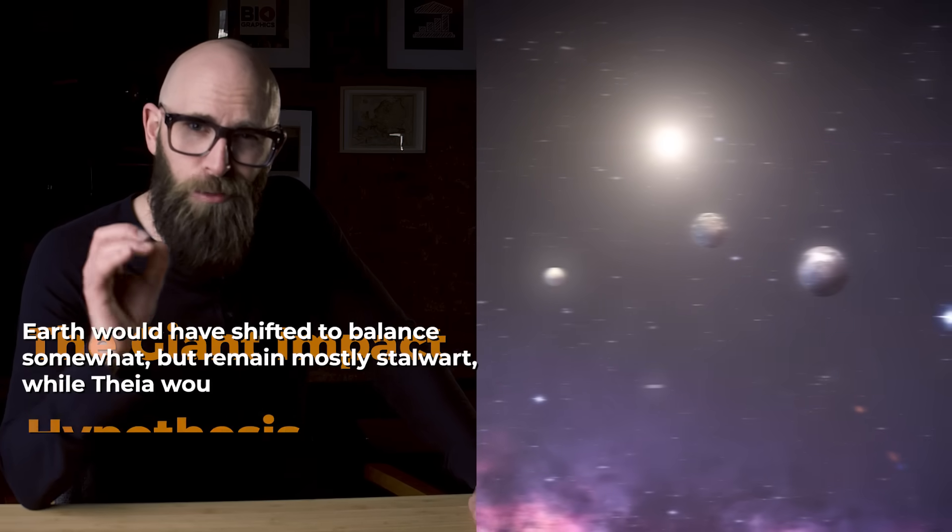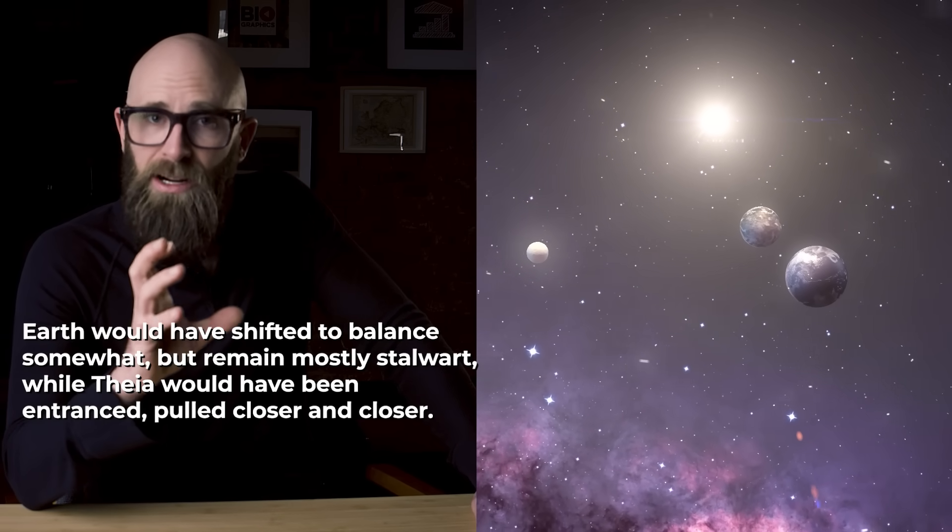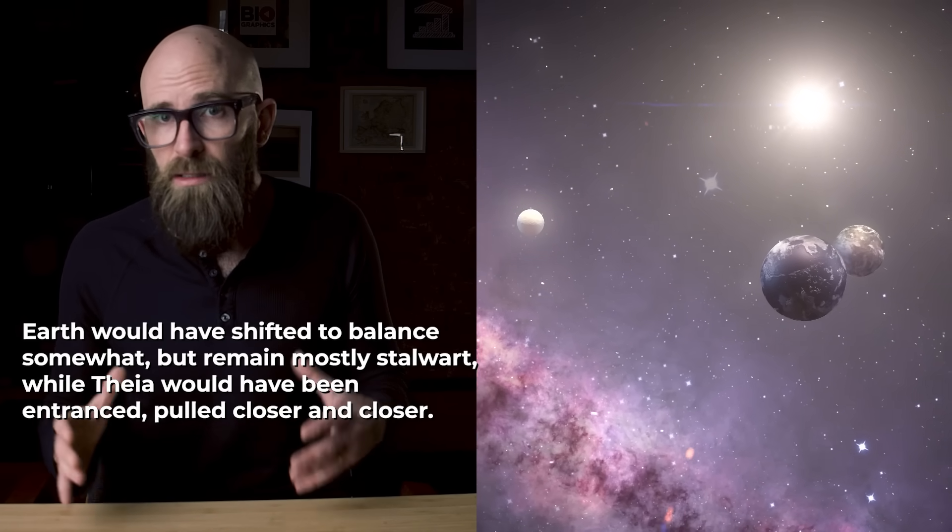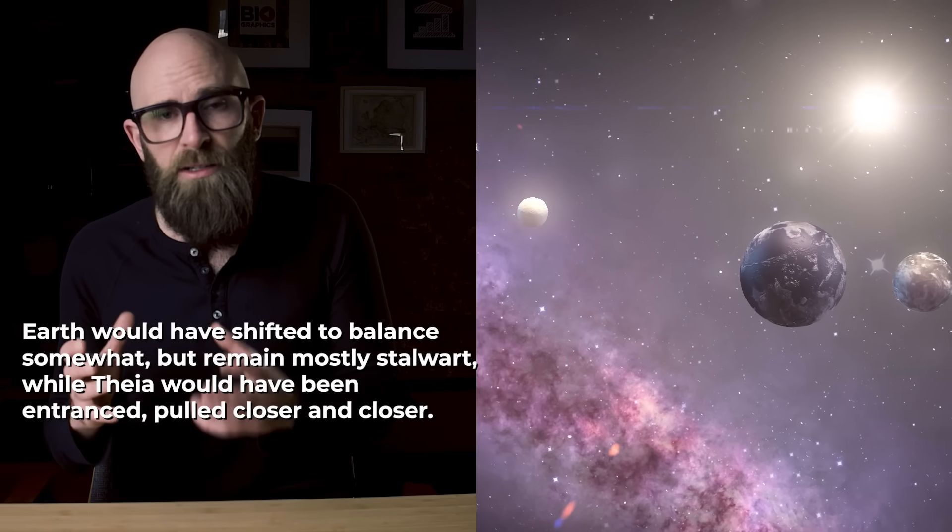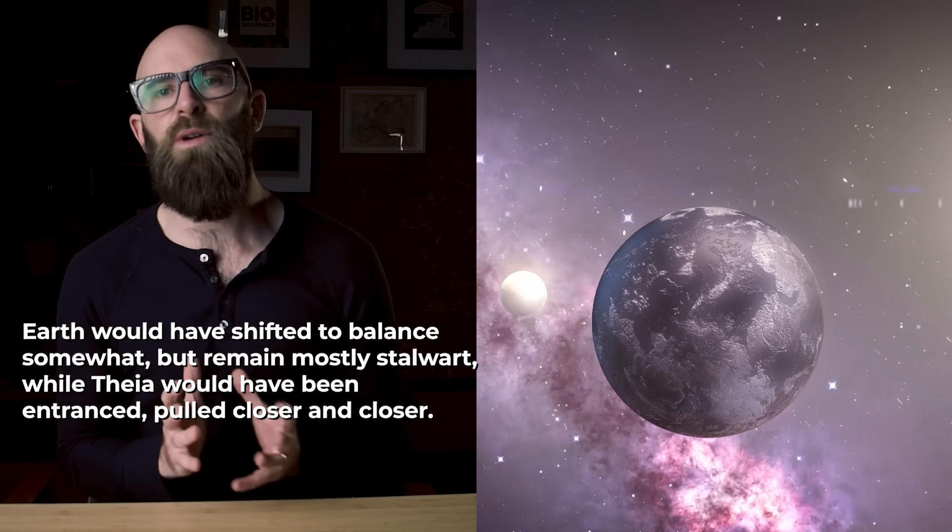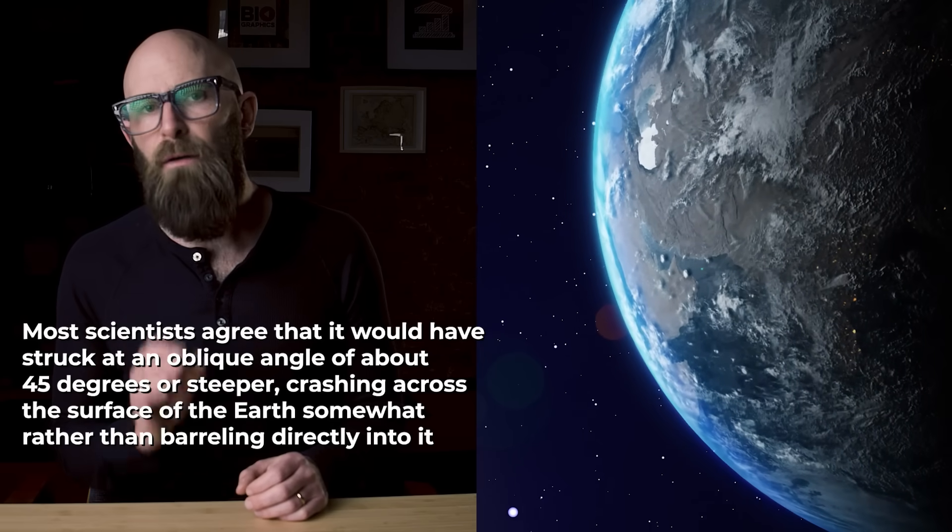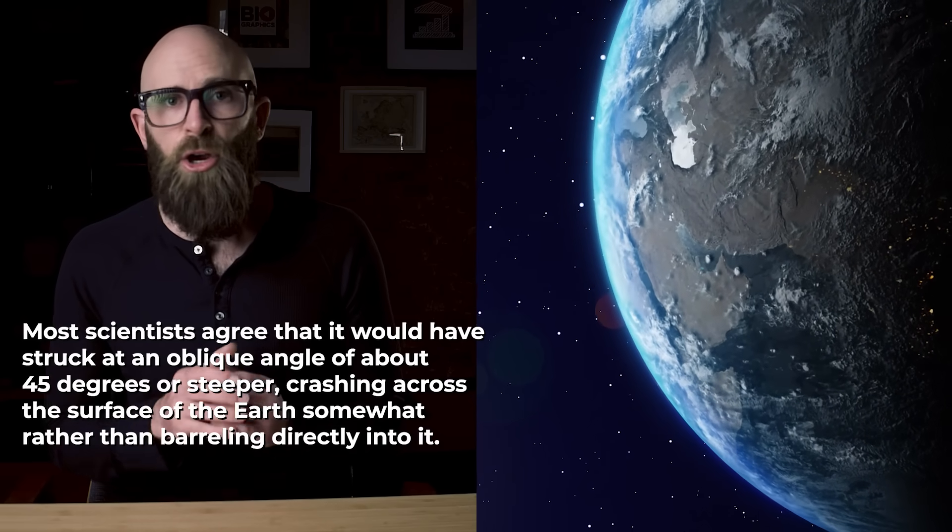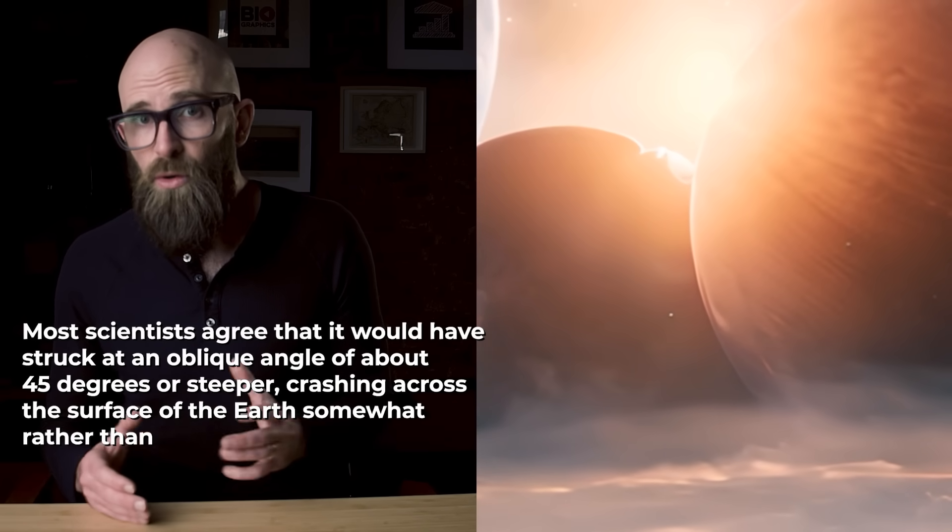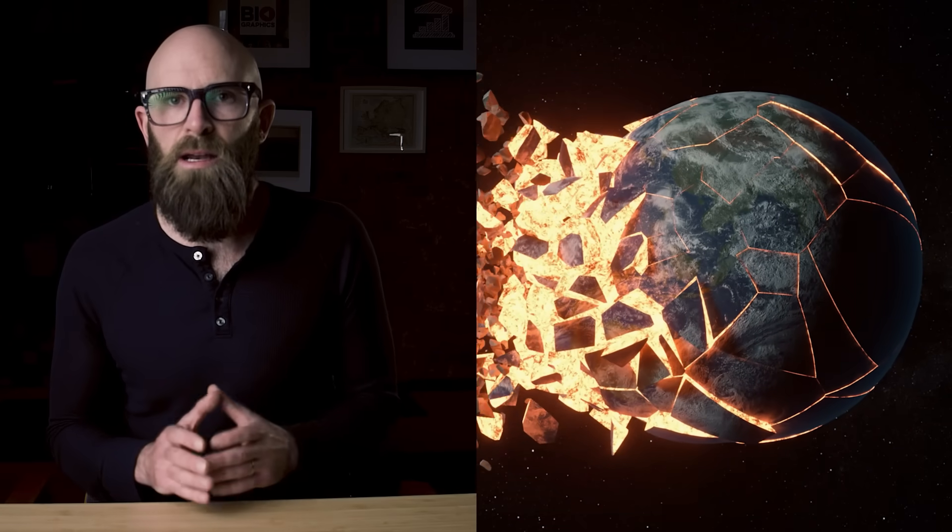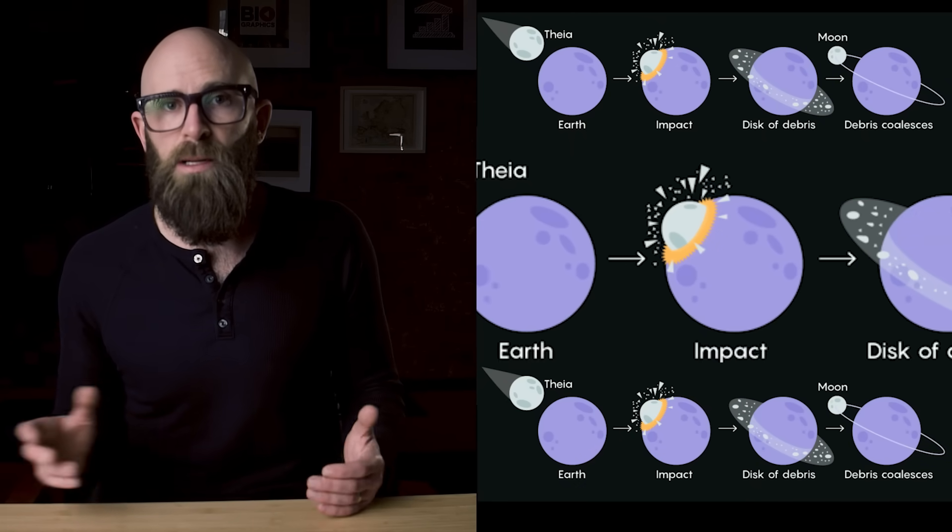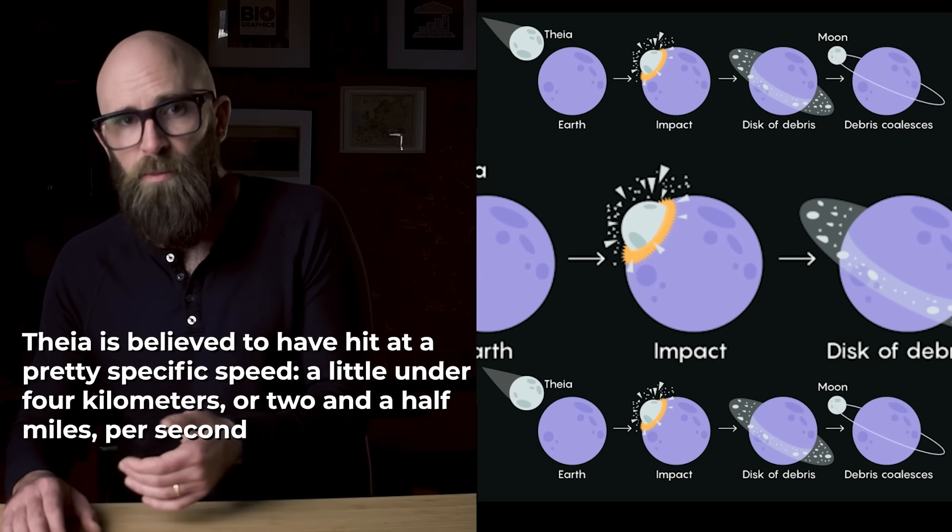The cascade would have begun when the two planets' gravity began to act on each other. Earth would have shifted to balance somewhat but remain mostly stolid, while Theia would have been entranced and just pulled closer and closer. Most scientists agree that it would have struck at an oblique angle of about 45 degrees or steeper, crashing across the surface of the Earth rather than barreling directly into it. A faster or more direct impact might have seen a chunk eaten out of the Earth itself, while a slower impact would have produced a moon positioned in a very different orbital path.